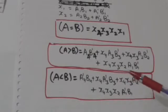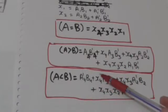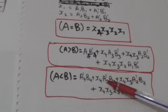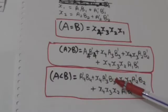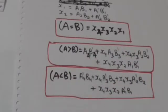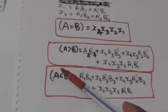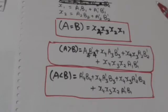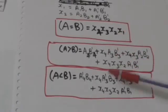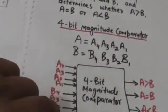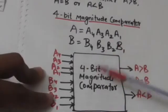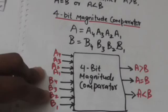When X4 is 1 (A4 equals B4) and A3 equals 0 and B3 equals 1, the value of B is greater than A, so the output variable A less than B will be 1. We now have boolean functions for all three output variables of this 4-bit magnitude comparator, and we can easily design the logic diagram for this 4-bit magnitude comparator. Thank you very much.